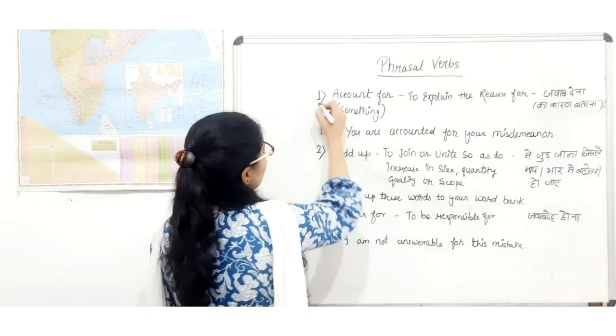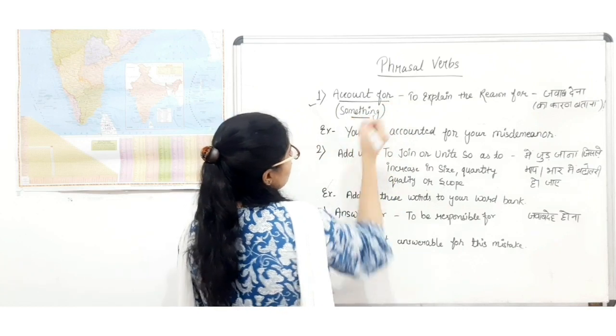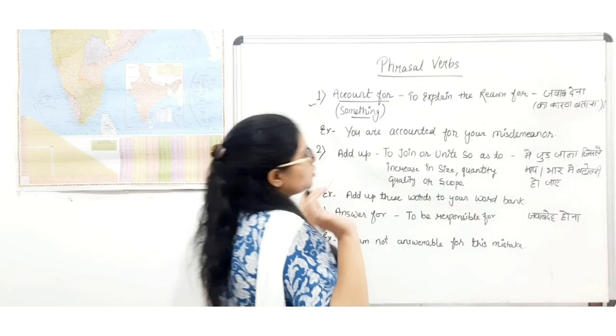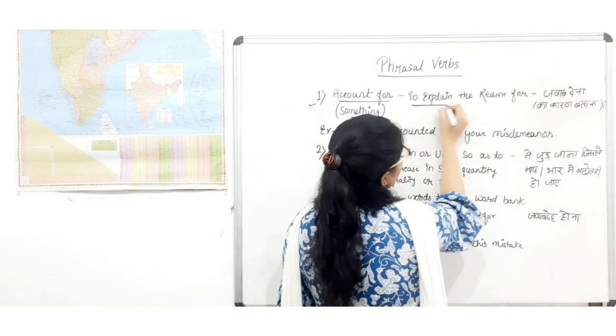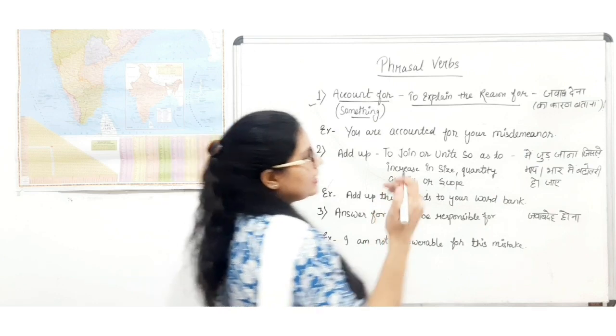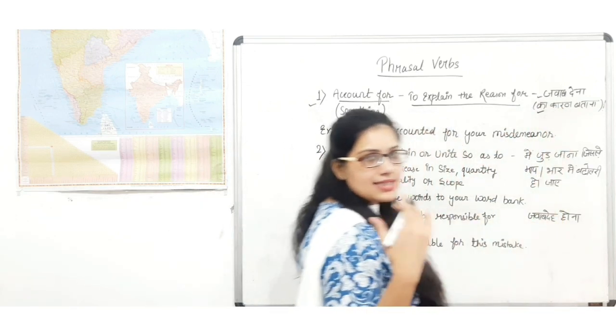So guys, the first word is 'account for'. It means to explain the reason for something - to explain the reason for something. That means when we tell the reason for some things.